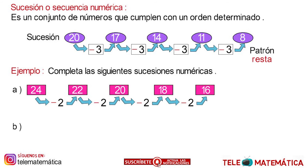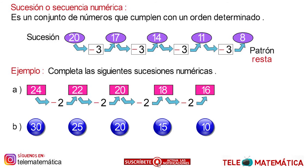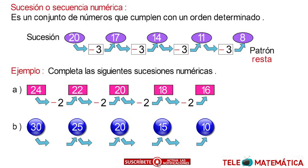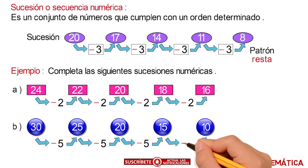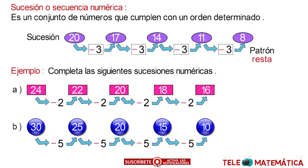Literal B: we have the succession formed by the numbers 30, 25, 20, 15, and 10. We must find the pattern used. Subtracting from 30, we get 25 — that number is 5. Subtracting from 25, we get 20 — it's 5. Subtracting from 20, we get 15 — it's 5. Subtracting from 15, we get 10 — it's 5. So the pattern of this succession is minus 5.